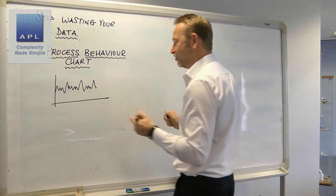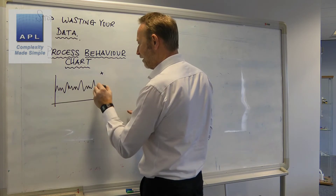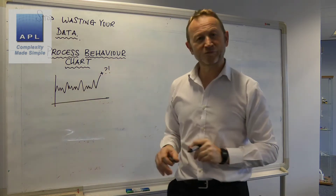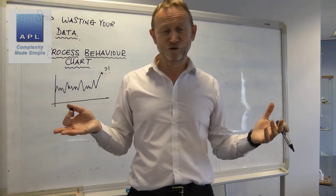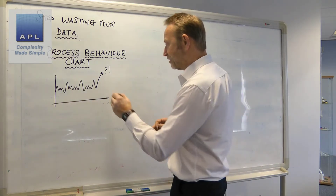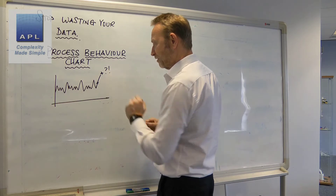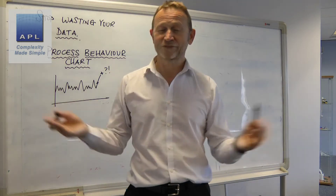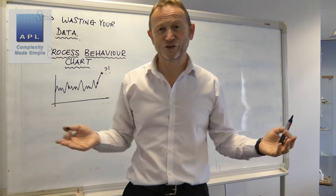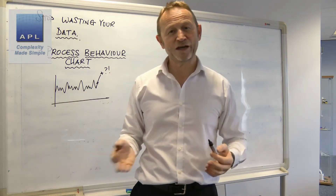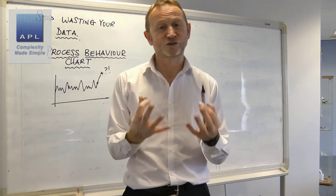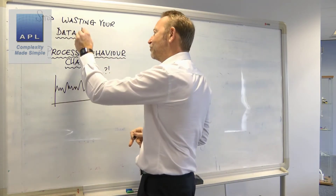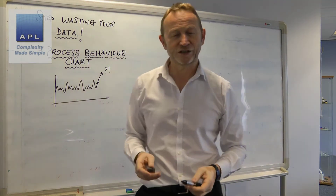If the setter could see this chart and gets a data point that's unusually high, that might make him think something's wrong with the setup. If the data point is in line with normal behavior, maybe it's a sign everything's okay and you can just set the process running. These process behavior charts could save us a lot of time.